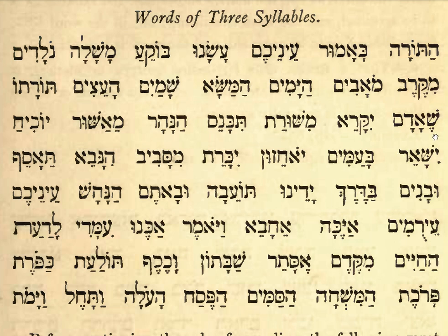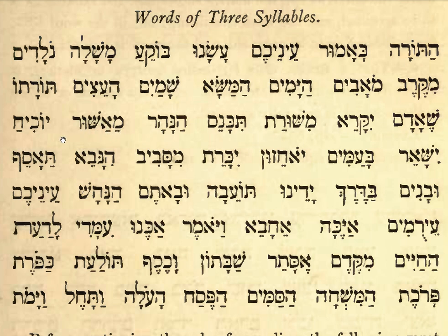Torato se'adam. Yikkare — doubled letter. Mishurat — doubled letter. Tikkanees — doubled letter. Hannahar — doubled letter. Me'ashsur, me'ashsur. Yo-hiaah, yo-hiaah. Notice this is 'ah' not 'ha': yo-hiaah — doubled letter.